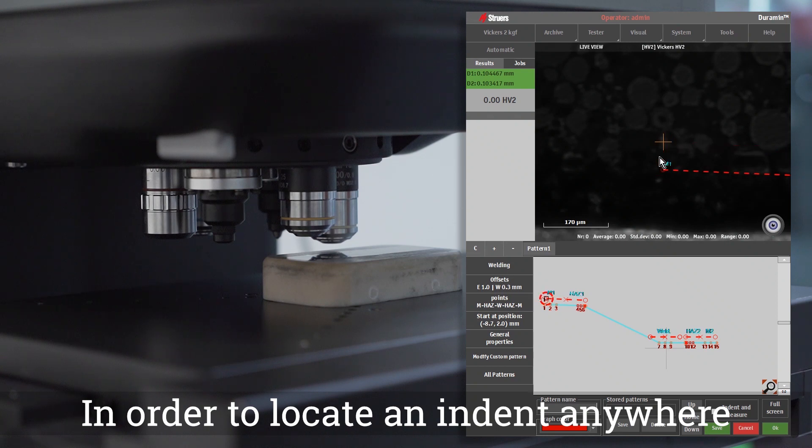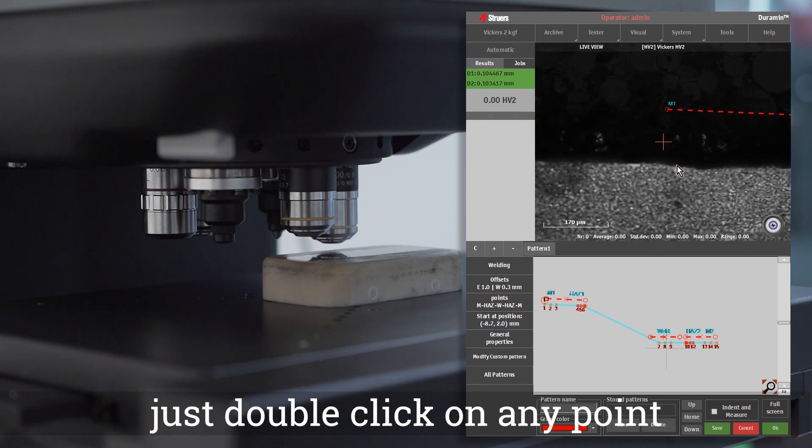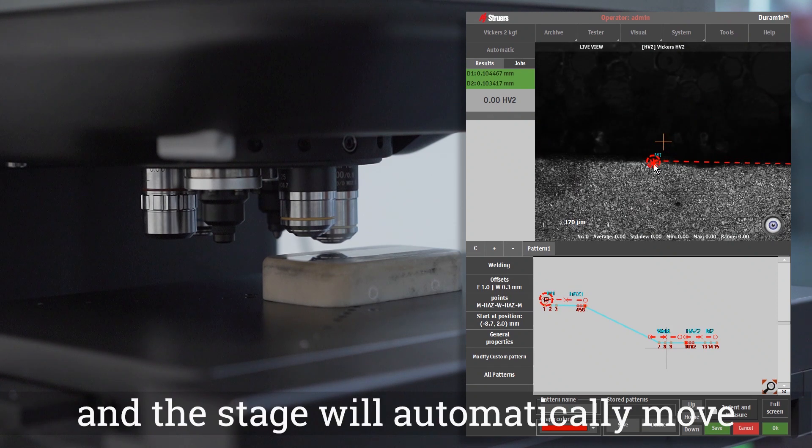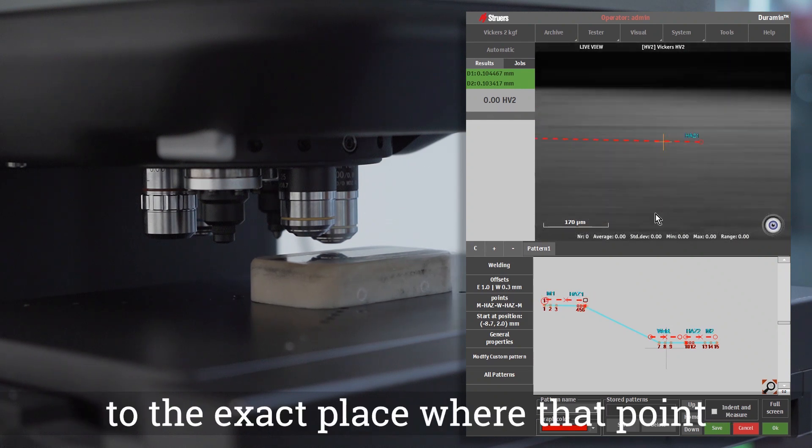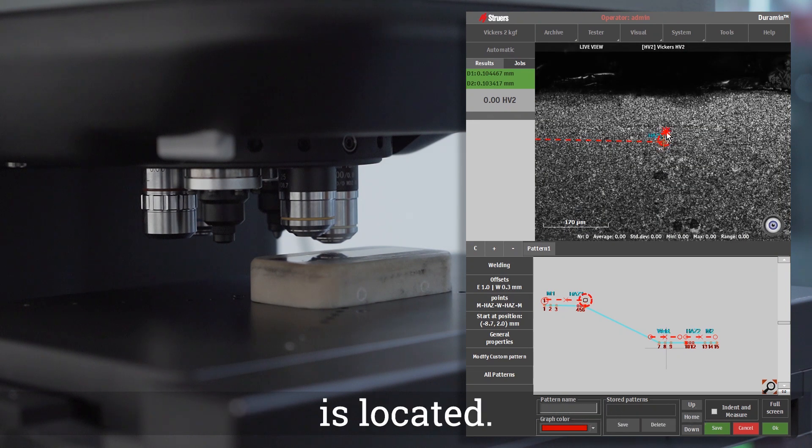In order to locate an indent anywhere, just double-click on any point in the test pattern and the stage will automatically move to the exact place where that point is located.